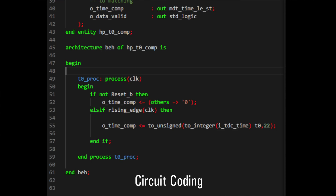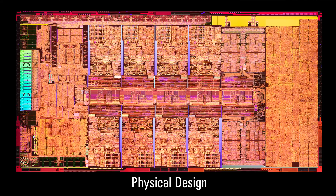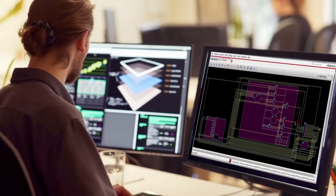Silicon chips are going through three main phases of their design. First of all, system-level design, then circuits coding, and then this code will be mapped to the logic gates — so-called physical design — where the layout of the chip is created. Exactly at this last phase of physical design is where AI tools can shine.